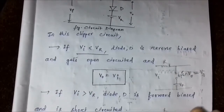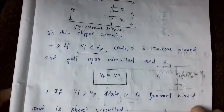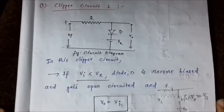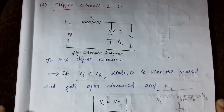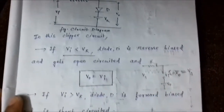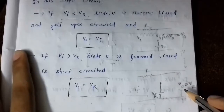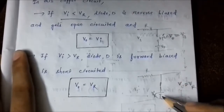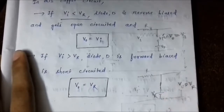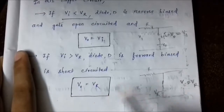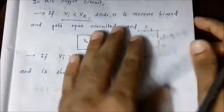When the input voltage is greater than the reference voltage, the P-type end is at a higher potential. This means the diode is in forward biased condition and is activated, behaving as a short circuit. In this case, the output voltage appearing across the output terminal is equal to the constant reference voltage V_R, since the diode is short-circuited.